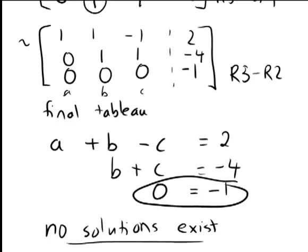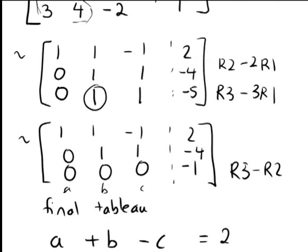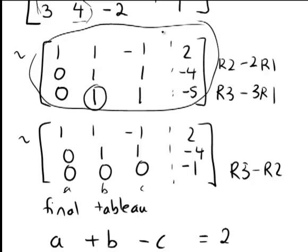And if we looked even at the second last stage of our Gaussian elimination, even then it was looking a bit ominous in hindsight. Because if you look at this tableau here, the second row is saying b plus c equals negative 4, the third row is saying b plus c equals negative 5. So even there we could see there's a problem.